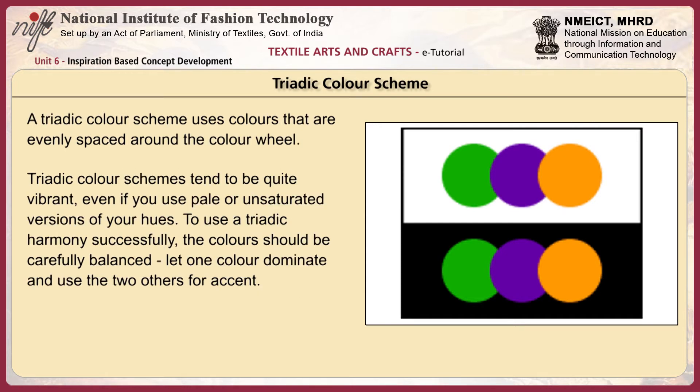A triadic color scheme uses colors that are evenly spaced around the color wheel. Triadic color schemes tend to be quite vibrant, even if you use pale or unsaturated versions of your hues. To use a triadic harmony successfully, the colors should be carefully balanced — let one color dominate and use the two others for accent.